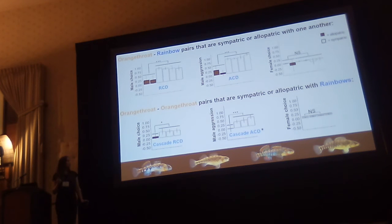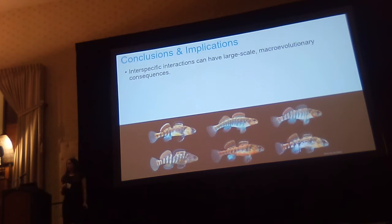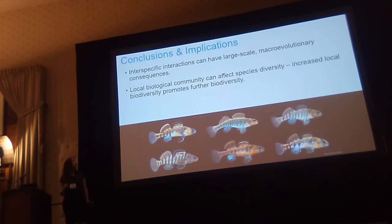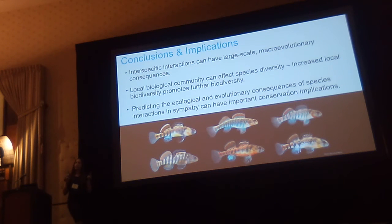This really changes how we think about speciation in darters, which are one of the most diverse groups of vertebrates in North America. To leave you with some broad conclusions: interspecific interactions can have large-scale evolutionary consequences, and this is an example of local biological community affecting species diversity — where increased biodiversity begets further biodiversity. Being able to predict how these types of species interactions might play out is particularly important right now. With global climate change, species ranges are shifting at a really rapid rate and species are coming into secondary contact at a fast rate, so predicting how interspecific reproductive interactions play out has really big conservation implications as well.